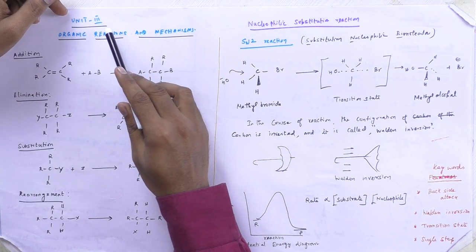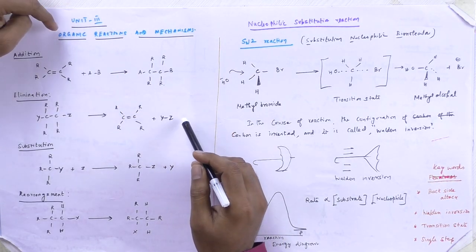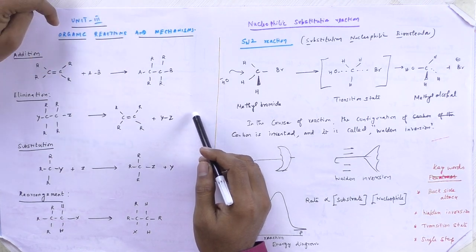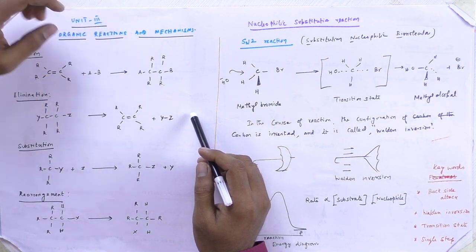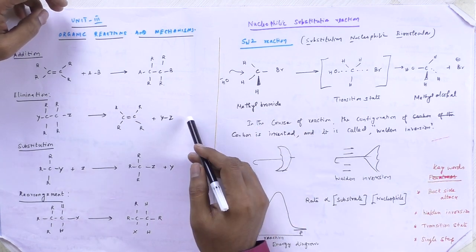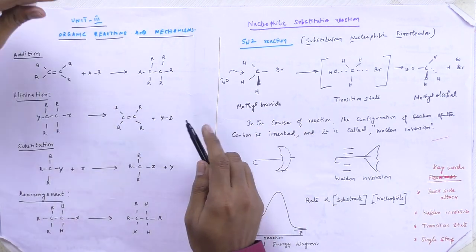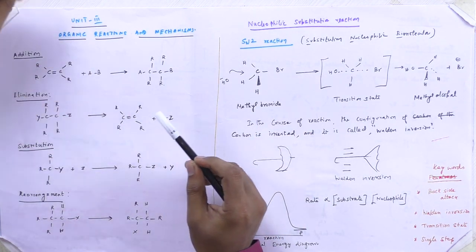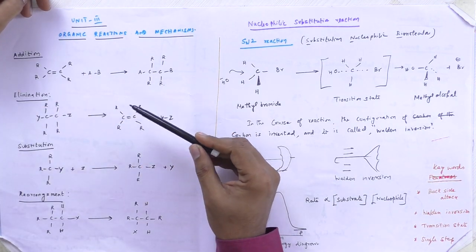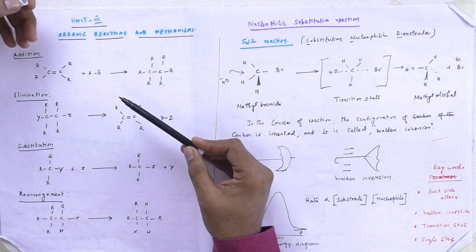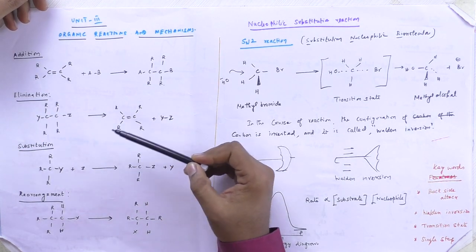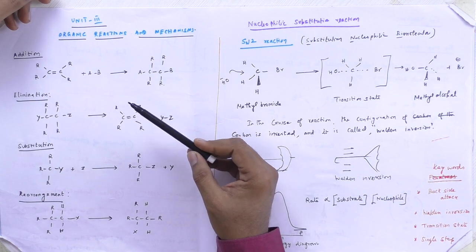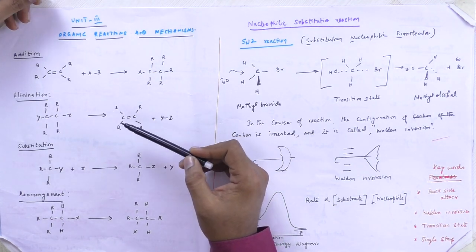Now, we are going to discuss about Unit 3 - Organic Reactions and Mechanisms. This is for first-year biotechnology students. In our syllabus, we have 4 types of reactions: addition, elimination, substitution, and rearrangement.